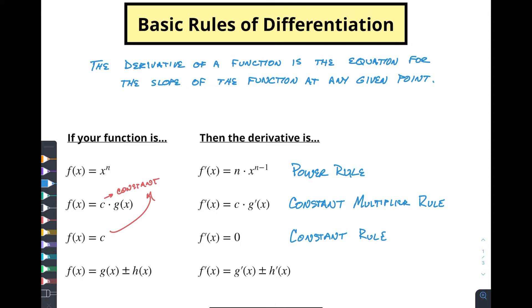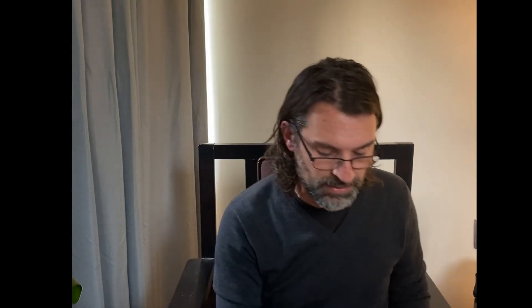And then finally, if we've got a function and it is the sum or the difference of different functions, then all you have to do is take the derivative of the first one, and then you continue to add or subtract, as appropriate, the derivative of the second one. And you can do this with the third one and the fourth one and the fifth one. You can have a whole long polynomial, but you're just taking the derivative of each individual piece. So let's play these out a little bit and see how they work with an actual example.